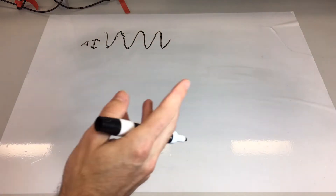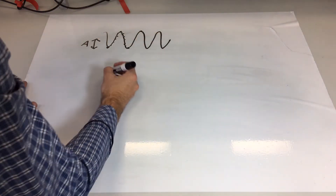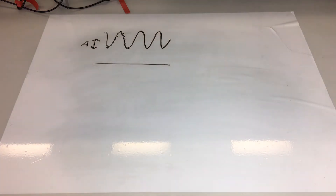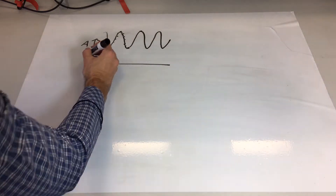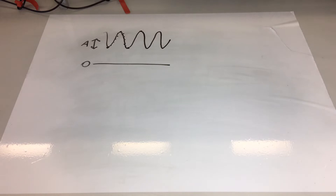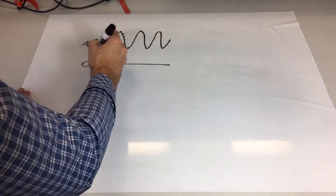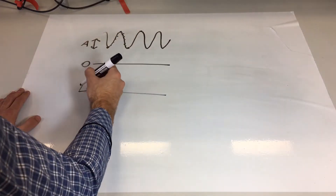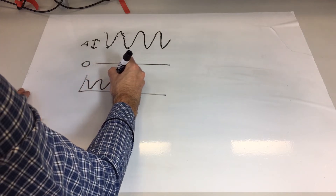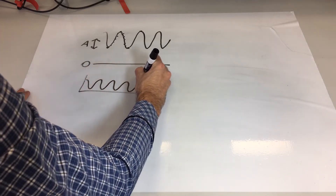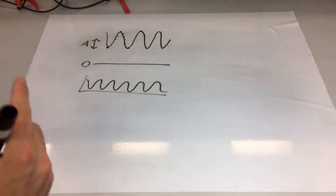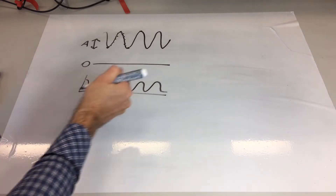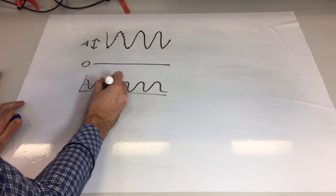We can't just take the average of all of those points because that would give you something that's absolutely flat at zero. So instead what we can do is take the square of the values so that everything is positive, and then take the average, which would give you something like this.